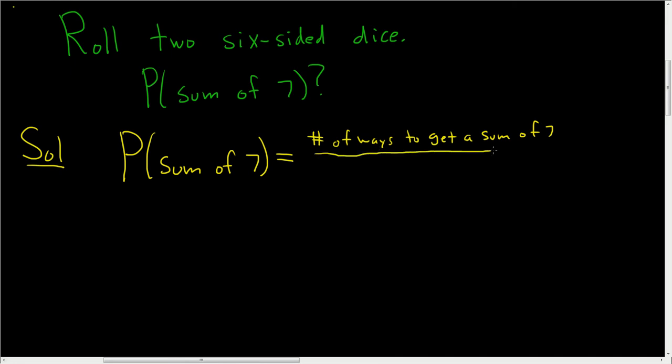When you first learn this, I think it's really helpful to write it down. It just helps you think about it more clearly. So the probability of getting a sum of 7 is the number of ways to get a sum of 7 divided by the number of ways to roll two dice, right?